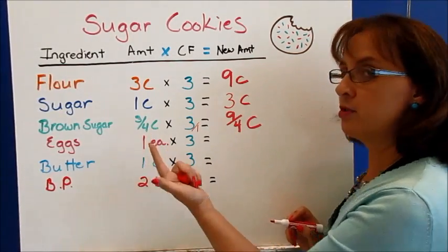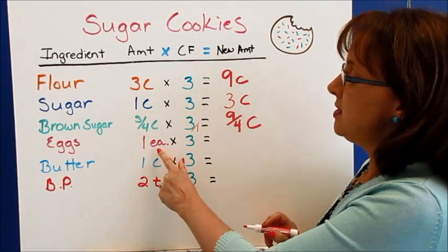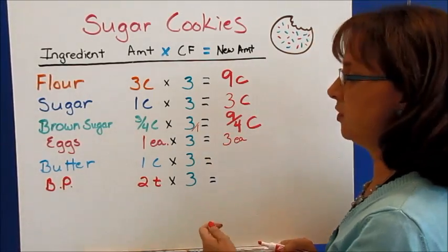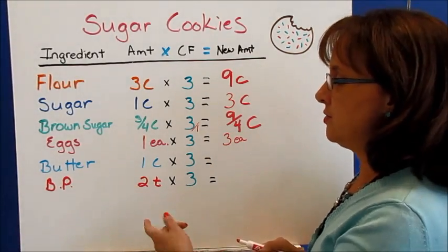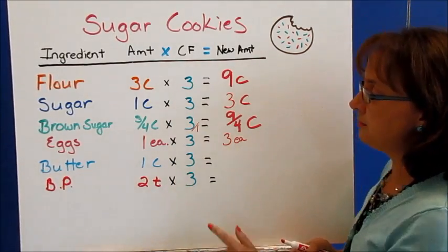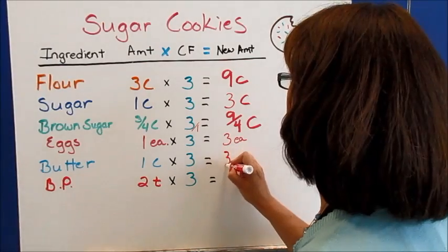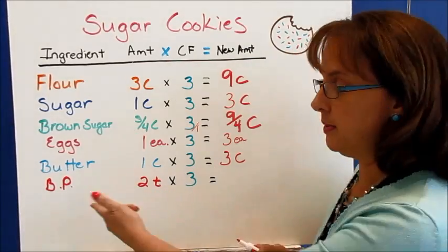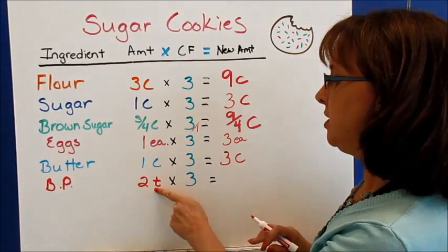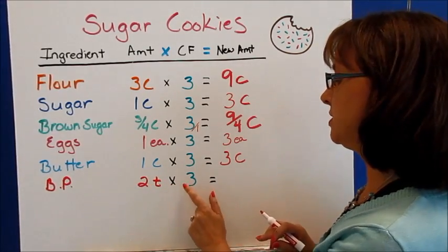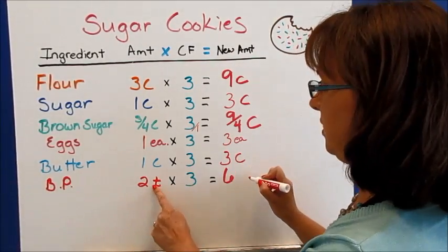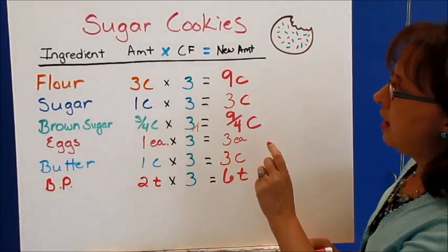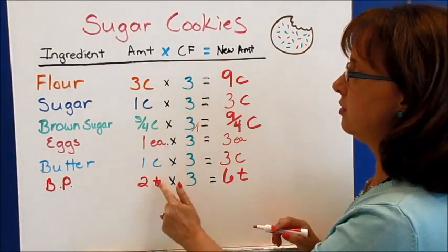For eggs, we need one egg — when counting individual items we say 'each' — one times three equals three each. Butter: one cup times three equals three cups of butter. Baking powder — BP in our recipe — we need two teaspoons, so two times three equals six teaspoons.